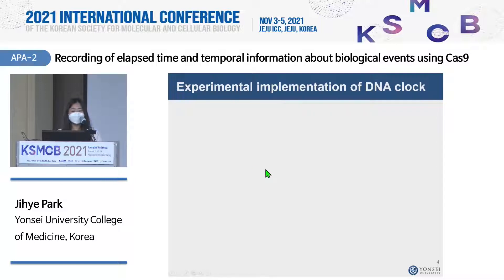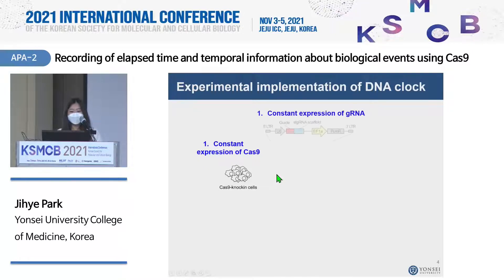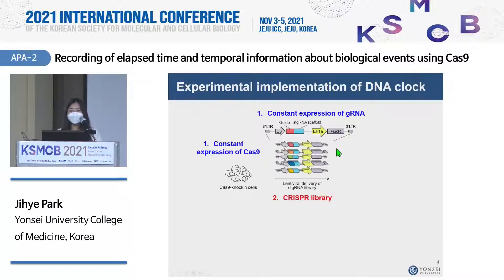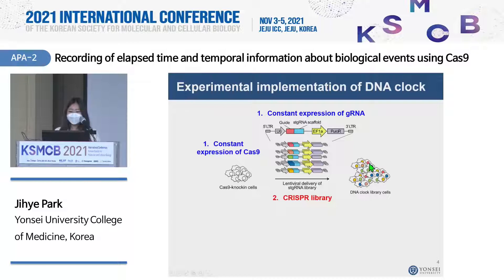We implemented these strategies experimentally. First, we established Cas9 knock-in cells, then delivered our guide RNA lentivirally for long-term and constant expression. When we delivered our guide RNA, we used a lentiviral library containing 24,000 different guide RNA sequences. We infected our Cas9 knock-in cells with this lentiviral library and generated what we call DNA clock library cells. We then harvested cells at different time points while maintaining enough cell numbers, and analyzed the indel frequency in our target sequences using deep sequencing.